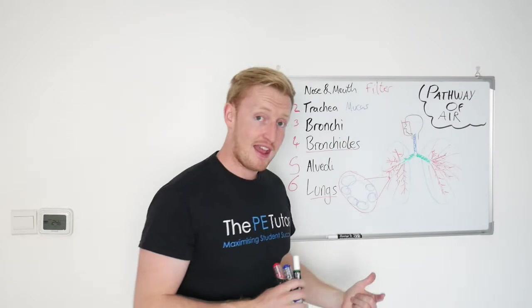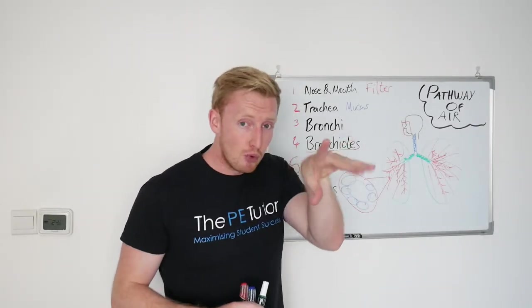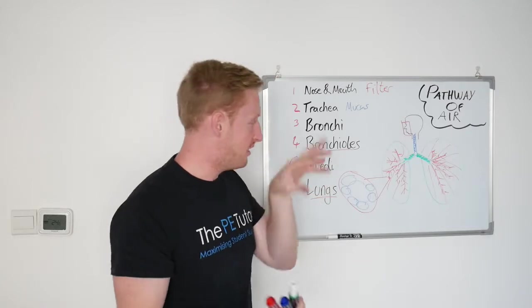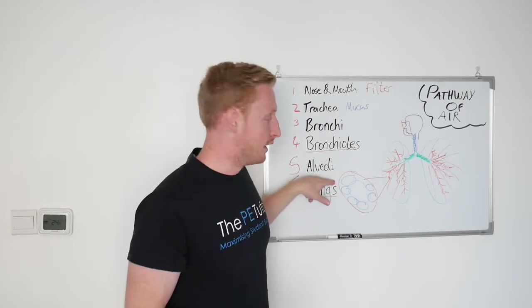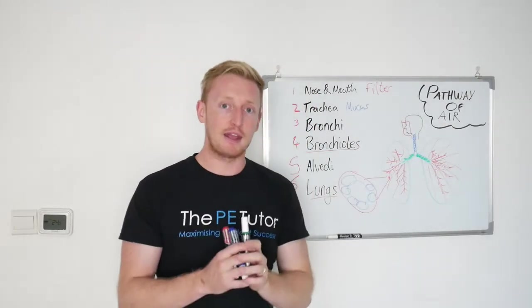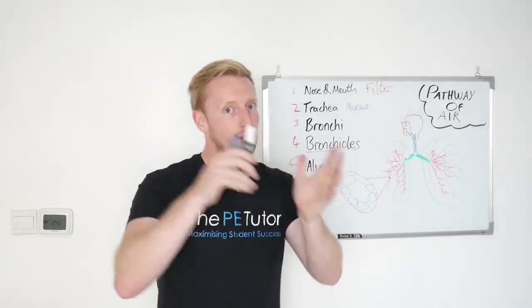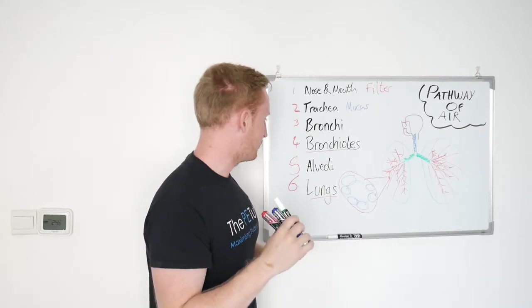Then it divides the airflow further by passing it into the bronchioles, which are far smaller, they aren't ringed with cartilage, they're much smaller now, and they then deposit the air into the millions of alveoli that reside in both lungs. The tiny sacs of air, one cell thick, and that's where gaseous exchange, which we'll come to in another video, that's where gaseous exchange starts to occur.